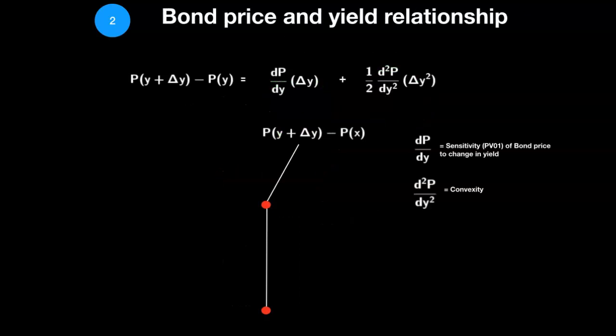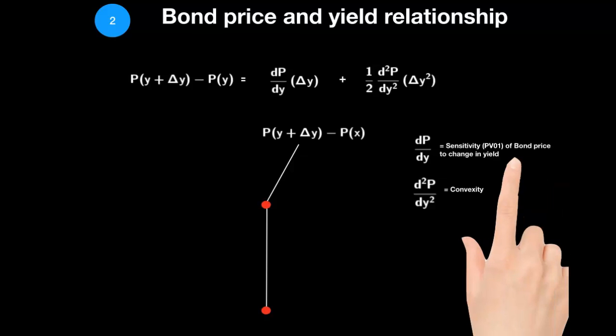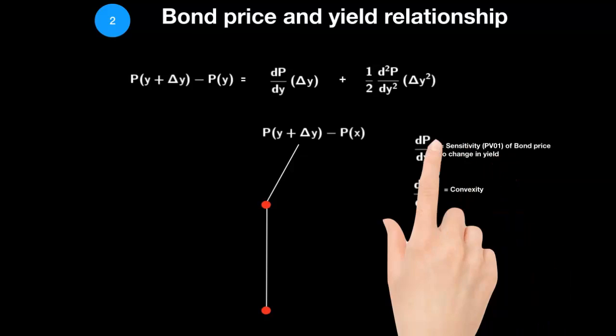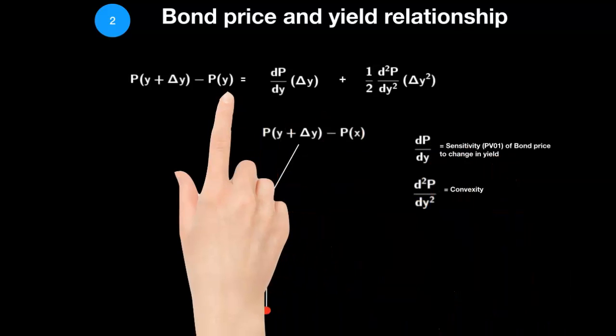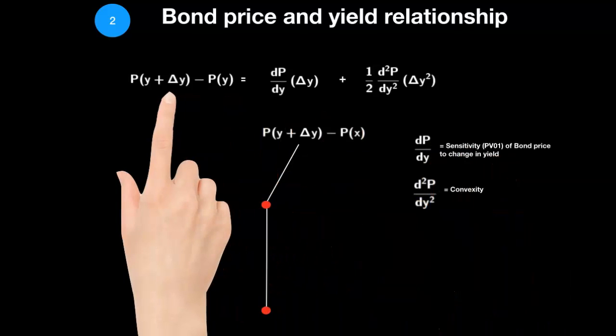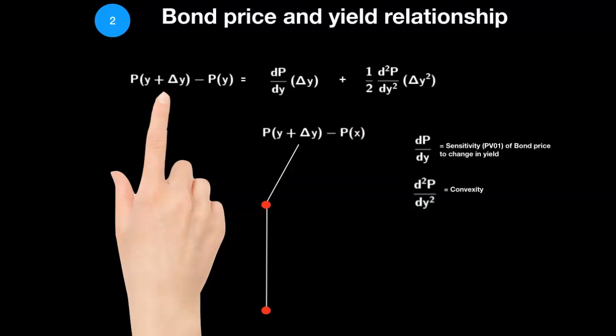In this example, we shall use Taylor's formula to relate sensitivities such as convexity of a bond to bond profit and loss. Profit and loss P and L is on the left side of the equation here.